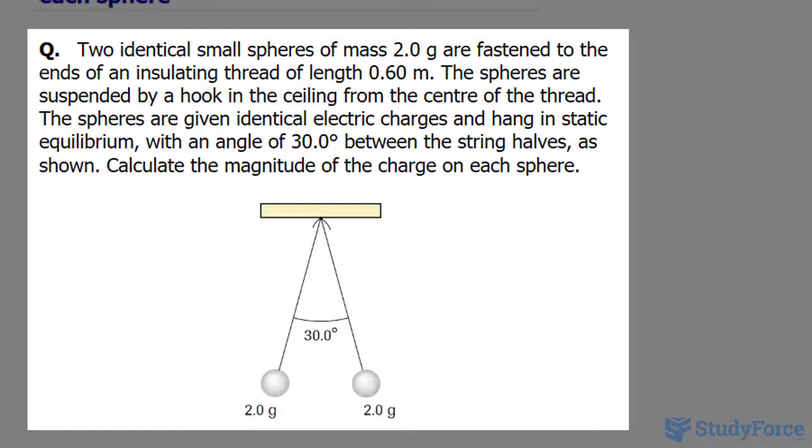The spheres are given identical electrical charges and hang in static equilibrium with an angle of 30 degrees between the string halves. Calculate the magnitude of the charge on each sphere.